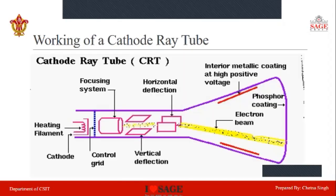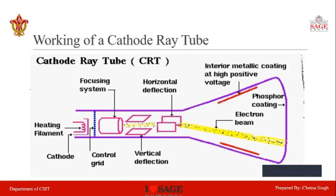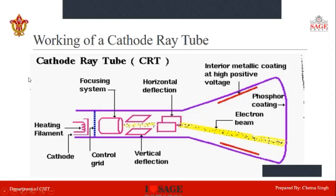Here we discuss the cathode ray tube. It is basically used for projecting images on the screen — it may be a video, animated image, or a simple image. For the cathode ray tube, we use a heating element, and the heating element heats the cathode rod.